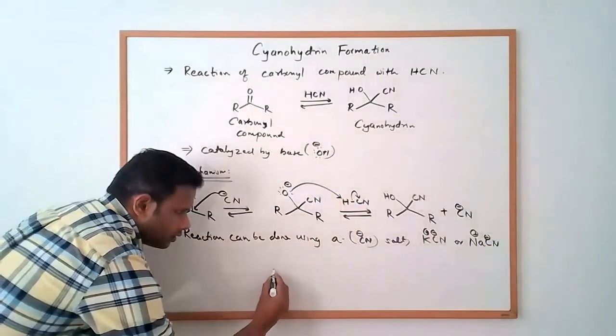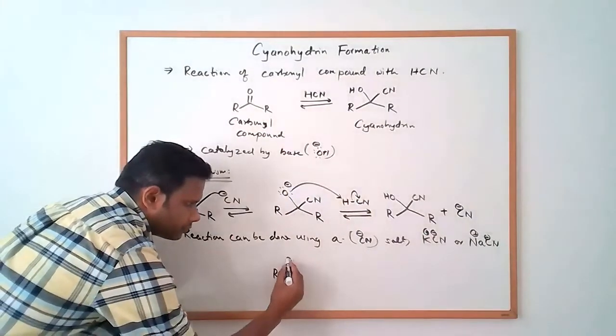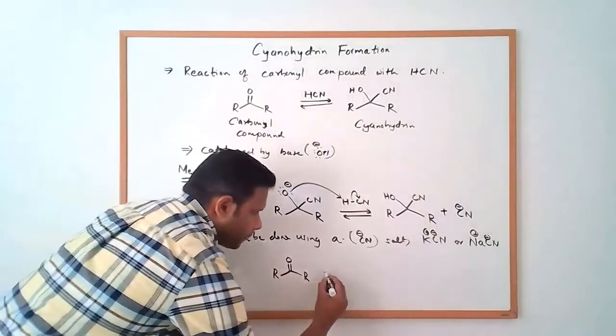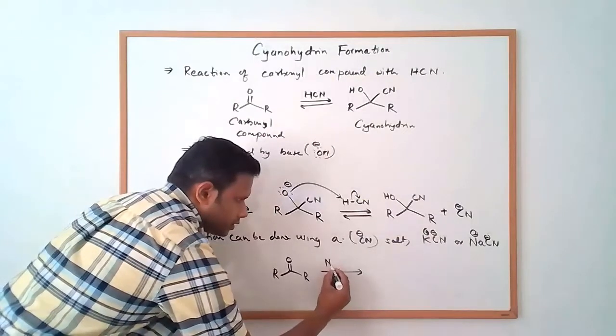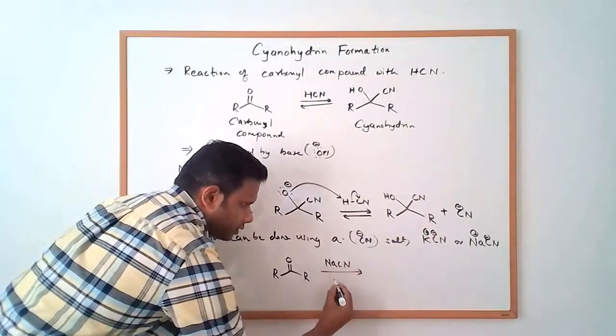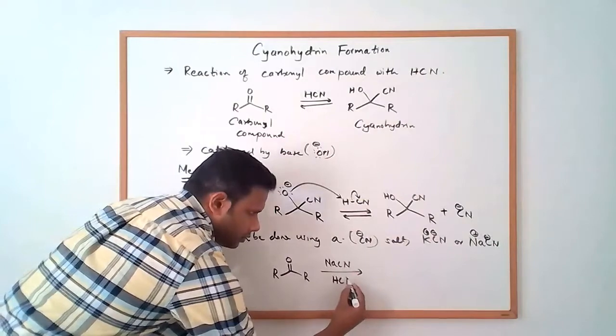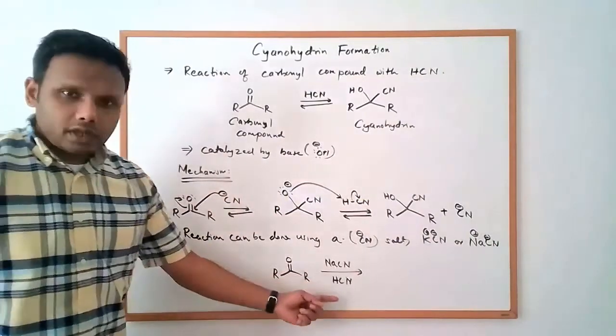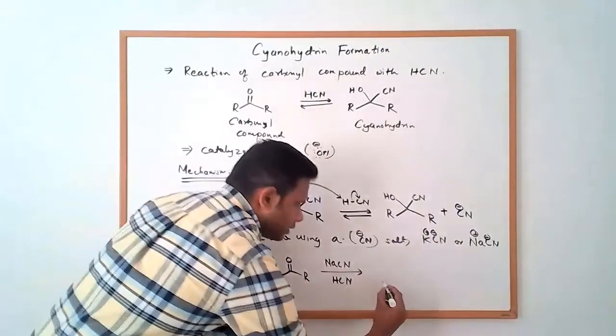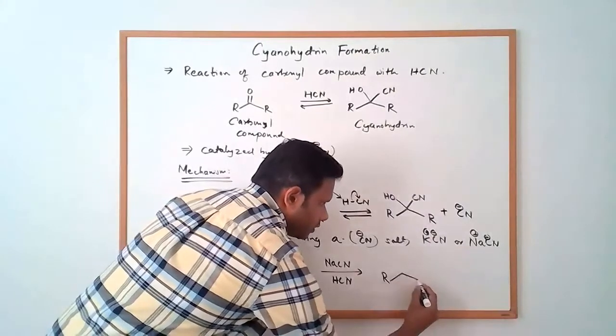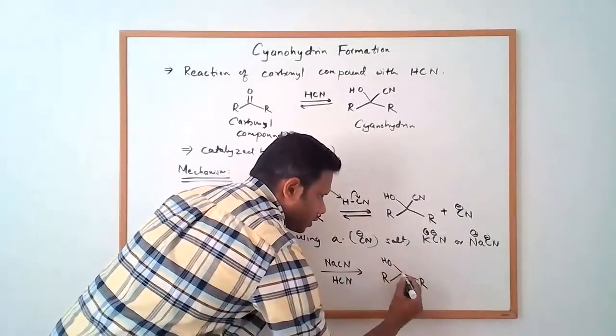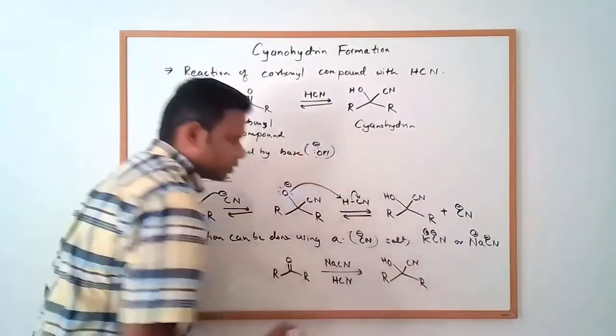So if you take the carbonyl compound and react it with, let's say, sodium cyanide in HCN along with hydrogen cyanide, this will give you the cyanohydrin, the hydroxyl group and the nitrile group.